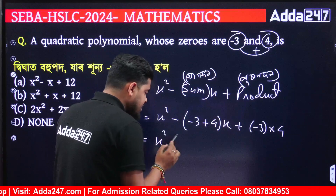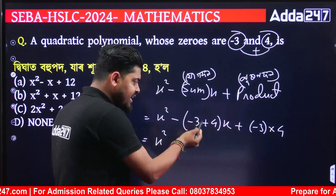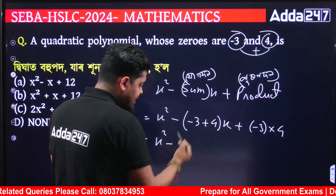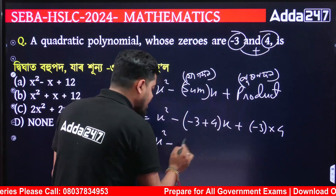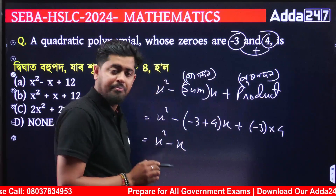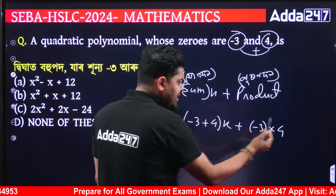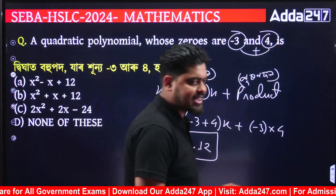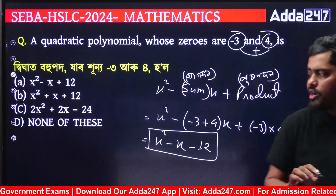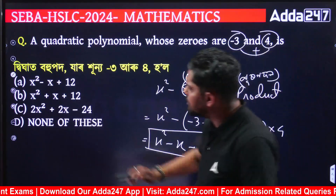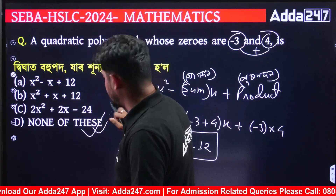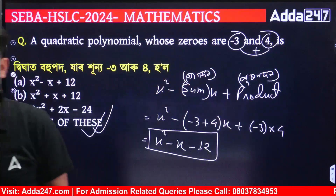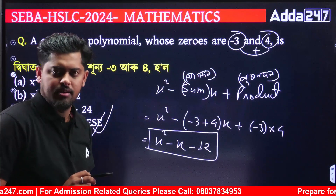This is x squared. Option D is the correct answer. Option D is the correct answer — clear. So the next question: the pair of equations 3x minus 5y is equal to 7 and minus 6x plus 10y is equal to 7.